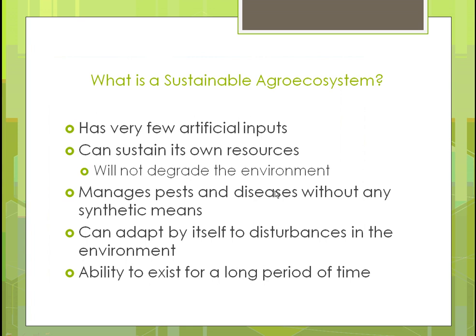So what is a sustainable agroecosystem? It has very few artificial inputs — basically, you don't use as much mechanization, you don't use synthetic fertilizers and pesticides. Can it sustain itself with its own resources? Can it grow whatever plants you're trying to grow in that area without degrading the soil? You manage pests and diseases without any synthetic means — using biological or natural methods instead of things like Roundup.